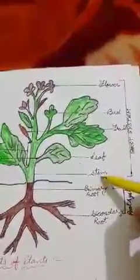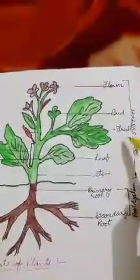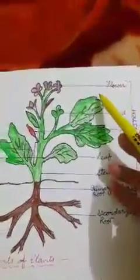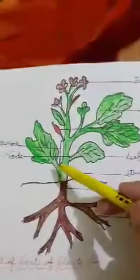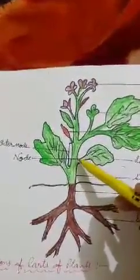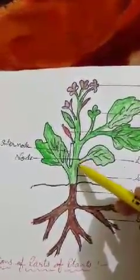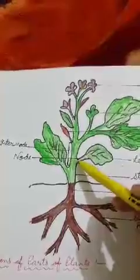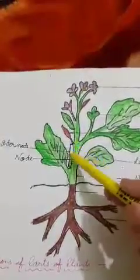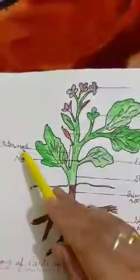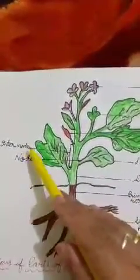The other parts of the plant that grow above the ground form the shoot system. These parts are stem, leaf, fruit, bud, and flower. The place from where the leaf is grown is called the node, and the space between two nodes is called the internode.